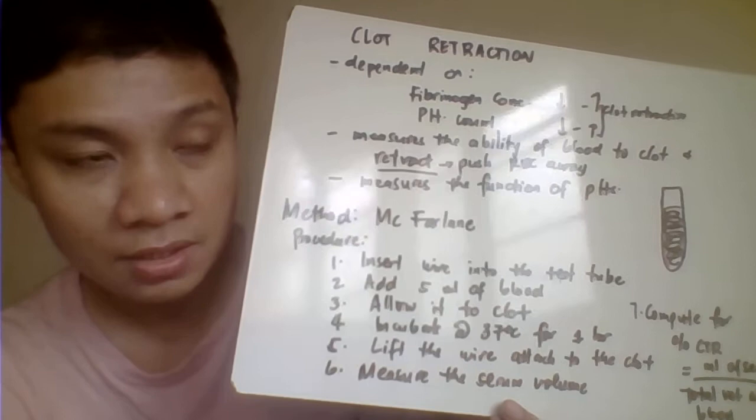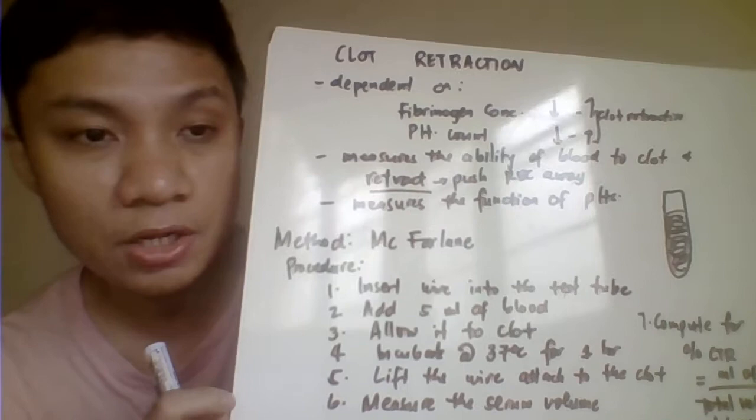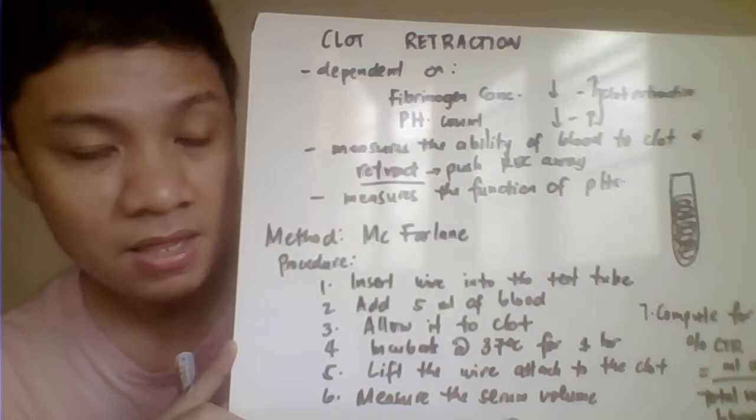If you have decreased platelet count or decreased fibrinogen concentration, that would hinder the blood to clot and eventually could not retract, therefore increasing the result of your clot retraction.